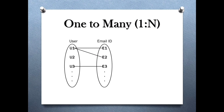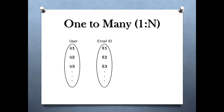Let's take an example. We have two entity sets: user and email ID. One user can have more than one email ID. It is not necessary that every user has multiple email IDs — some users may not have any email ID at all. Two users cannot share one email ID. Even if every entity is related to just one entity of the other set, or if there is no participation, we can say it is a one to many relationship. In other words, every one to one relationship is a one to many relationship, but the converse is not true.